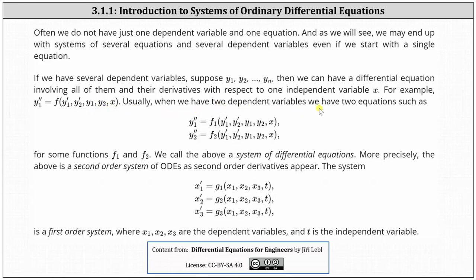Usually when we have two dependent variables, we have two equations for some functions f1 and f2. We call the above a system of differential equations. More precisely, the above is a second-order system of ODEs as second-order derivatives appear.